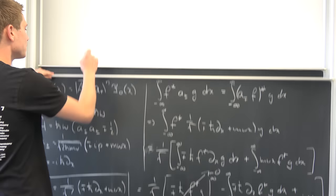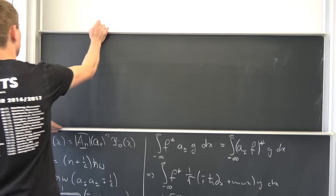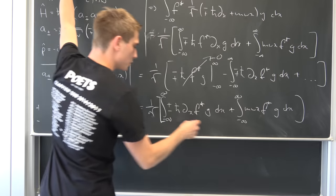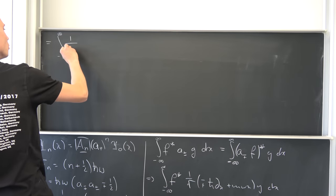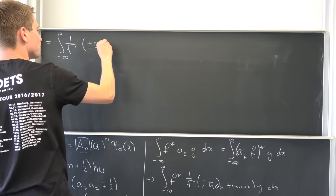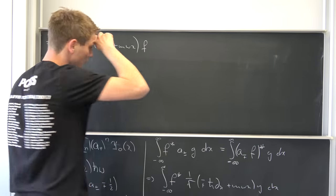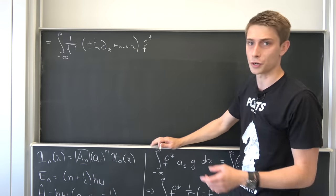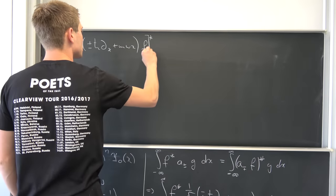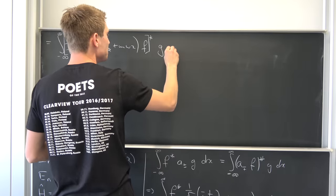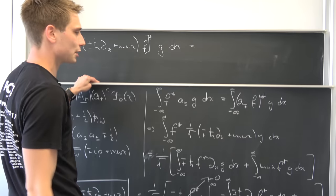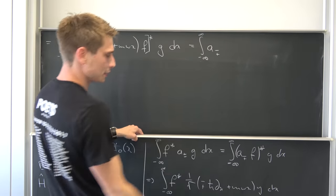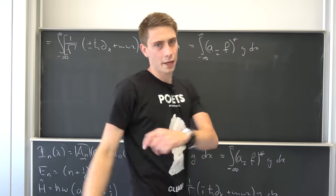We are basically done. Using linearity of the integral we bring both terms together, factor out, and bring the constant back inside. We end up with an integral from minus infinity to infinity of: 1 over the square root, times (±ħ ∂ₓ + mωx) times f, all conjugated, times g dx. This factor is real-valued, so taking the conjugate doesn't change anything. If you look closely, this is exactly the conjugate of a±, which is a∓. So we have shown that the integral of f* (a± g) dx equals the integral of (a∓ f)* g dx.